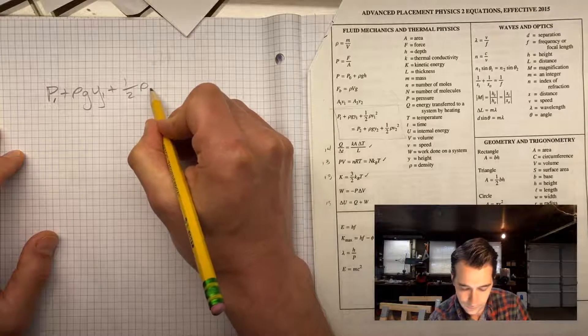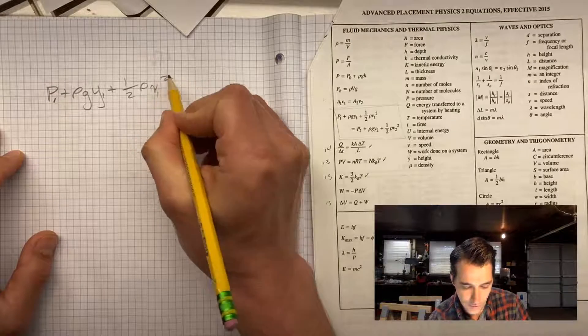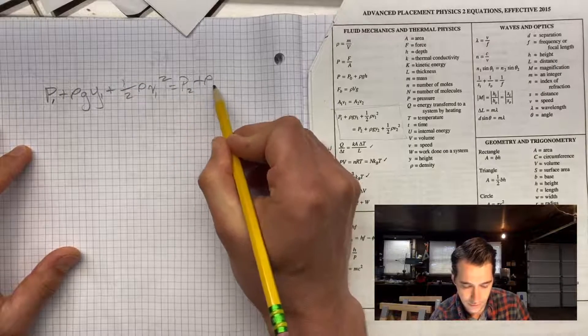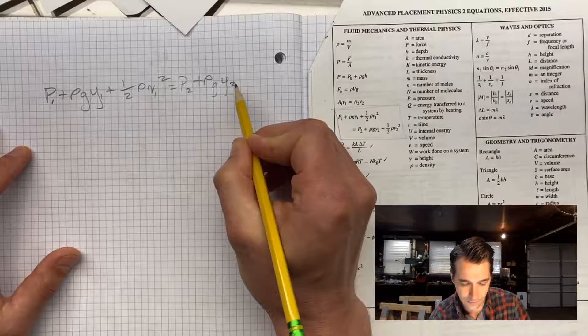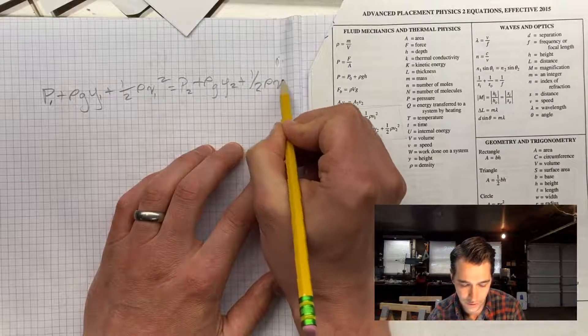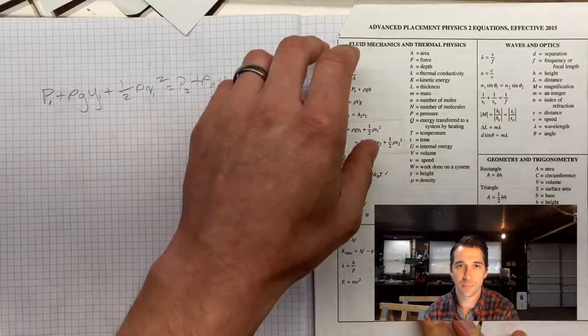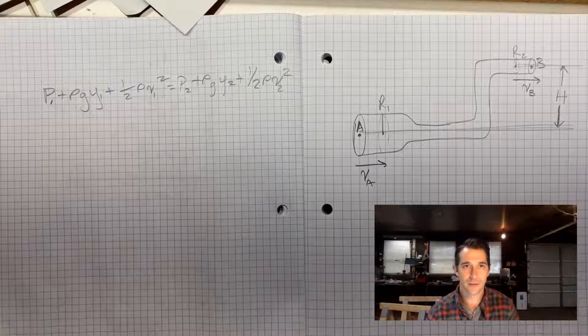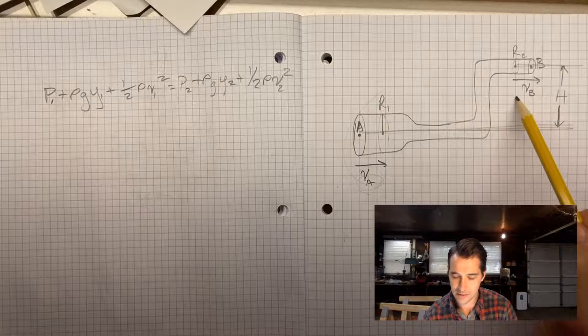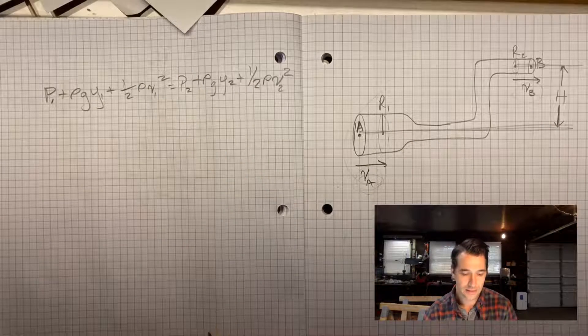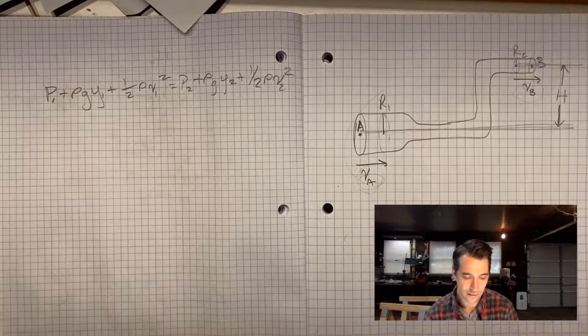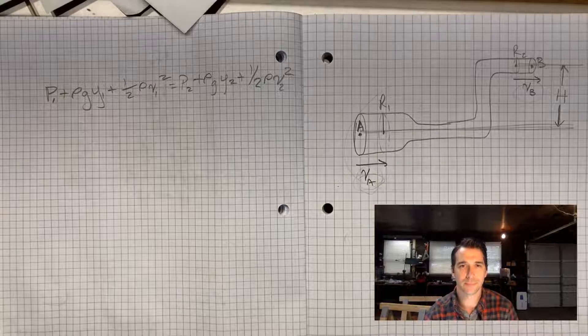So, here we go. P1 plus rho g y1 plus one half rho v1 squared equals P2 plus rho g y2 plus one half rho v2 squared. So before I even plug in anything from our problem, we could plug in our VA and VB, I mean really these are 1s and 2s and A's and B's, so it's not super important to put that in here right away. I want to think about this problem a little bit.